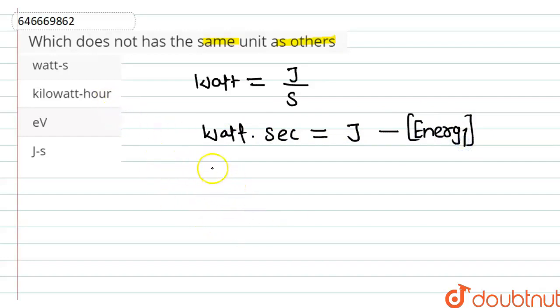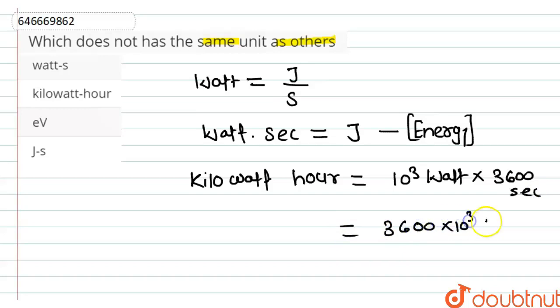Now, kilowatt hour is also unit of energy because here kilowatt hour will be equal to 10 to the power 3 Watt into and hour represents 3600 second. So it will be equal to 3600 into 10 to the power 3 Watt into second and we know that Watt into second represents Joule. So kilowatt hour will be equal to 3600 into 10 to the power 3 Joule.